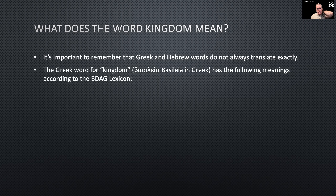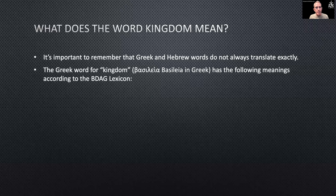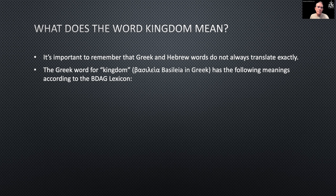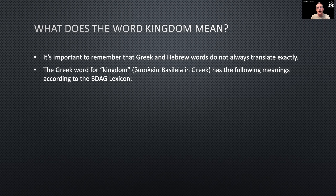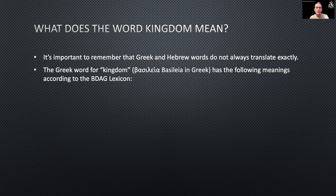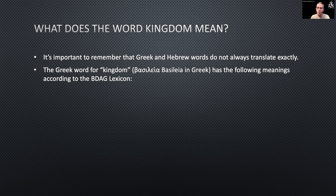The Greek word for 'kingdom' is 'basileia.' There you can see the Greek version, and I've spelled it out in English lettering: basileia. It has the following meanings according to the BDAG lexicon. I've given you a shortened version of this — if you want to look up the full BDAG lexicon entry on basileia, you'll find a lot more detail. But this covers the primary definition and a secondary definition of the word.